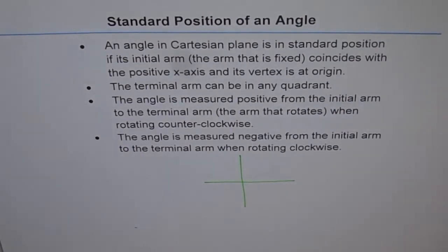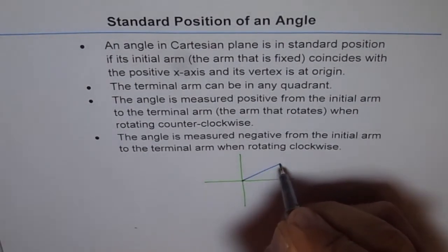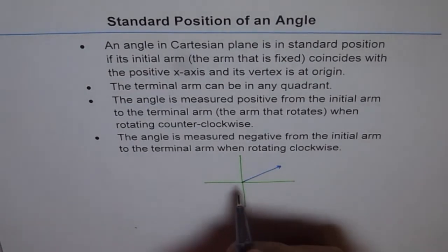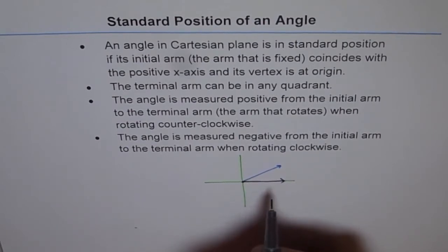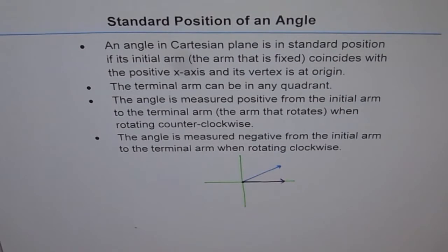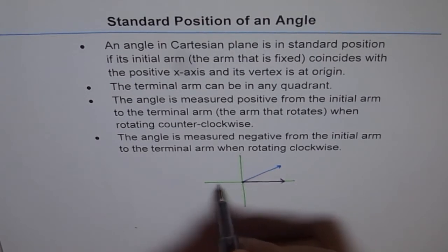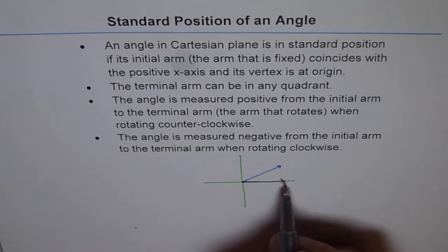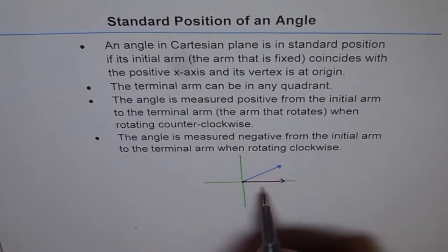So that is our Cartesian plane. If we have an angle in a Cartesian plane, the initial arm is a ray that starts from the origin in the direction of the positive x-axis. The starting point is the origin of the Cartesian plane, O, and the ray moves in the positive x-axis direction. Now, how is an angle found? An angle is found when the ray rotates.